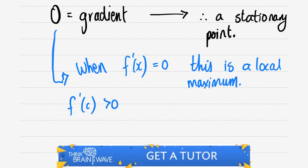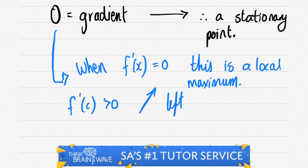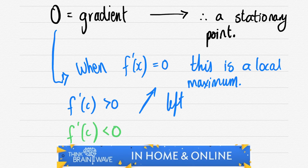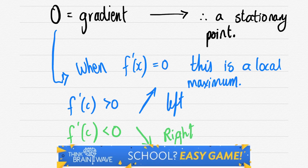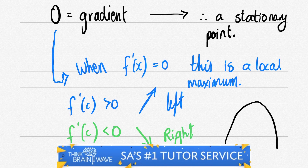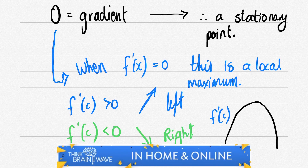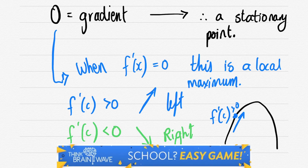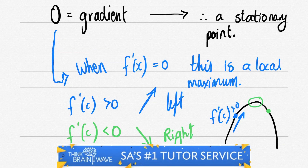Let's look at the derivative of the function where it's greater than zero. On the left hand side we say it's positive. If it's less than zero however, on the right hand side we say it's negative. So on the left hand side of this parabola we see a positive gradient or a positive first derivative. On the right hand side we see a negative, and at the top we see a stationary point.